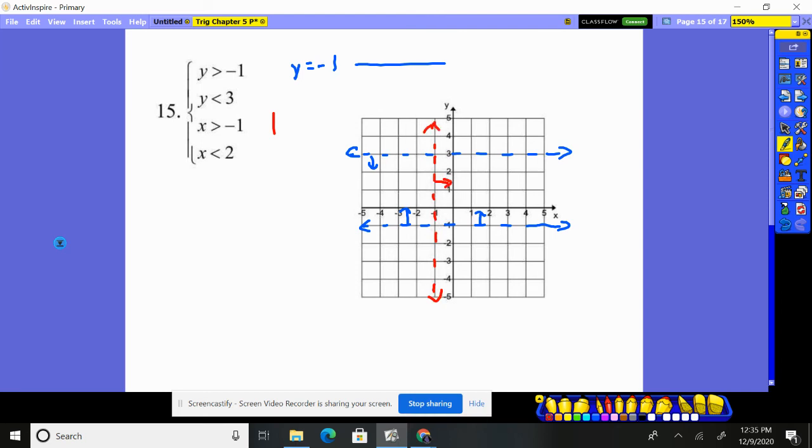The other one is two, and again, dash line, but it says less than two, which means that way. So you can see what this is created. We're above, below, left, right. It's everybody in this little rectangle. We've created a rectangle is what we've created for number 15.